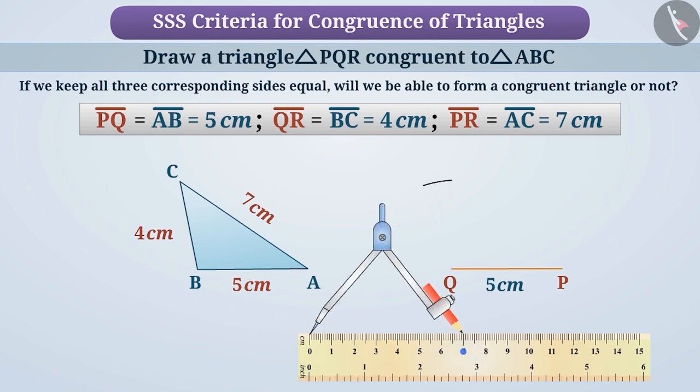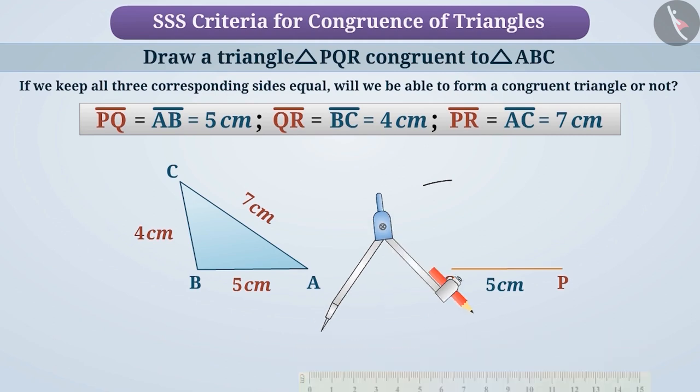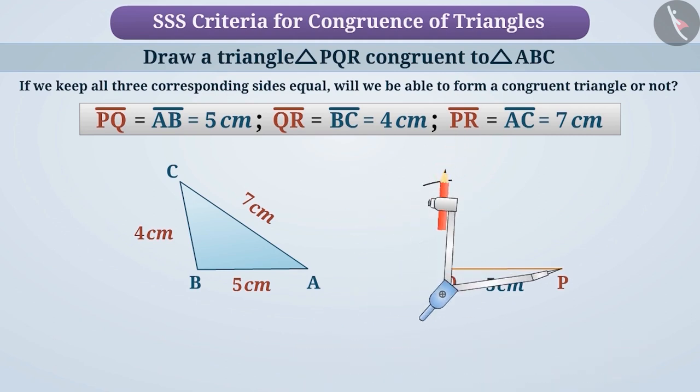Then, taking a distance of 7 cm with the compass, we will place the pointed end on P and draw another arc cutting the first arc. The point of intersection of the two arcs will be the point R which is at a distance of 4 cm from Q and 7 cm from P.